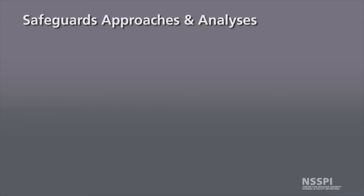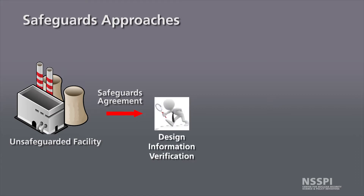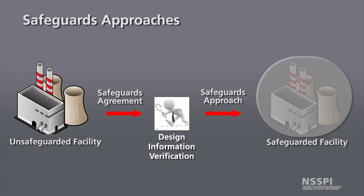In this section we are going to talk about safeguards approaches and analyses used by the IAEA. Safeguards approaches are basically the process by which the IAEA takes an unsafeguarded facility and applies nuclear safeguards. Beginning with an unsafeguarded facility, the IAEA concludes a safeguards agreement with the state, then examines the facility and the nuclear materials being used there, develops its safeguards approach, and applies safeguards — resulting in a safeguarded facility.